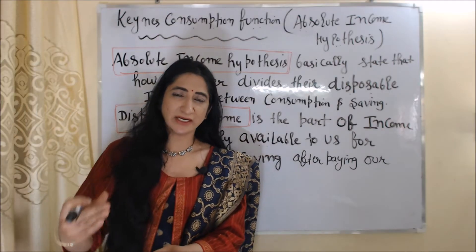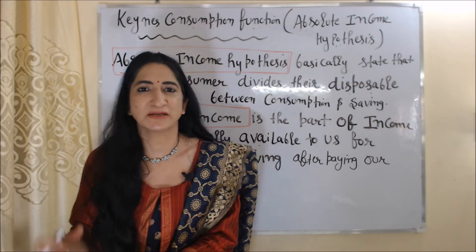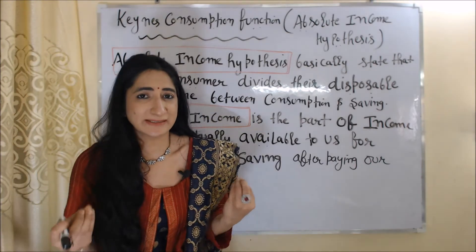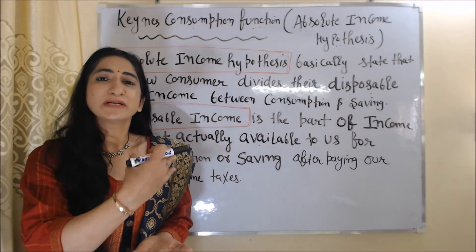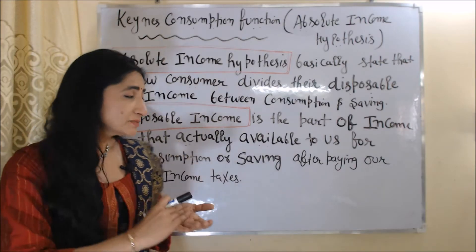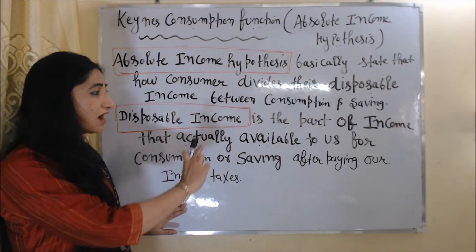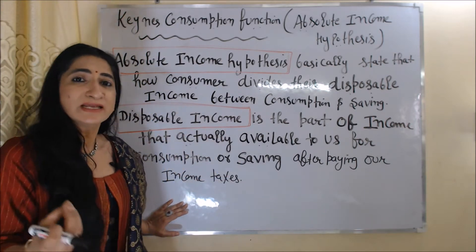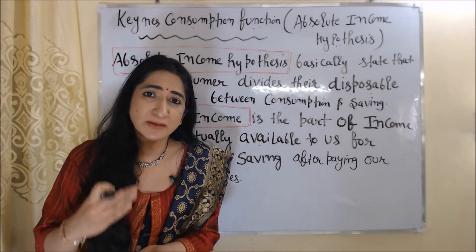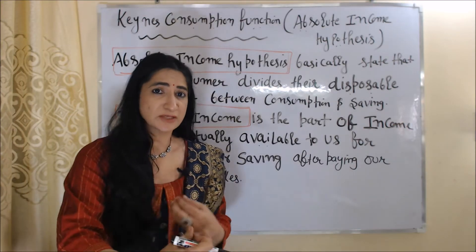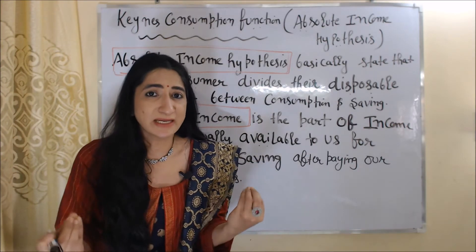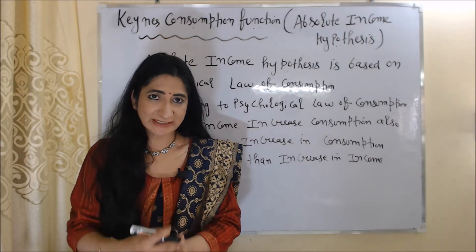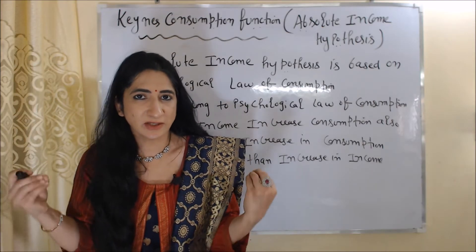Disposable income is the part of income that is actually available to us for consumption or saving after paying our income taxes — whatever income remains to us, either for consumption or saving after paying income taxes, is called disposable income. The Absolute Income Hypothesis is based on the psychological law of consumption.